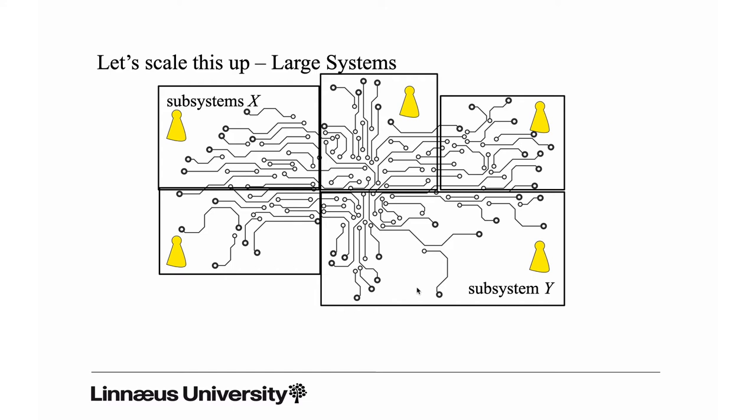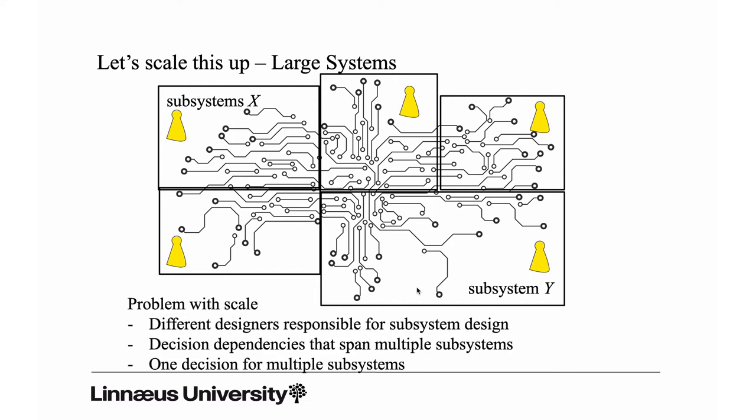But there will always be challenges connected to that approach. If you have different designers responsible for subsystem design, there will be decisions that create dependencies to other decisions. Some of the decisions you make for a subsystem will span multiple subsystems — if you make a decision for one it could affect many other subsystems. Scaling this up reveals two interesting things: one decision affecting multiple subsystems, and a single decision in one subsystem that affects other subsystems.